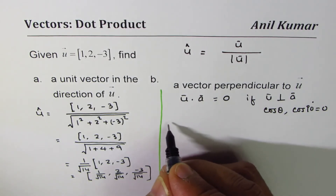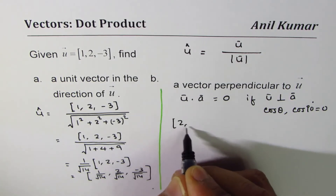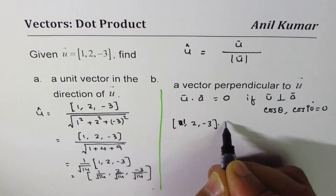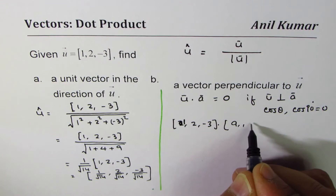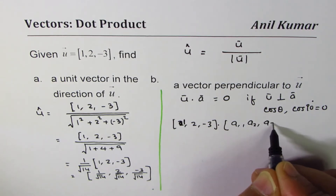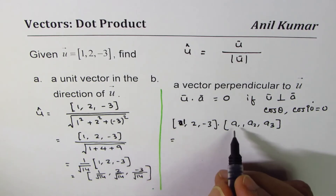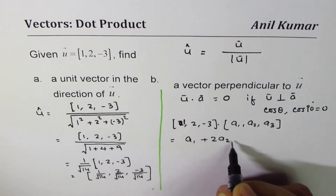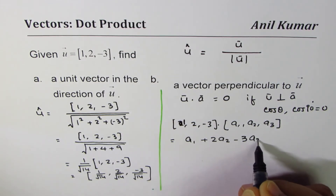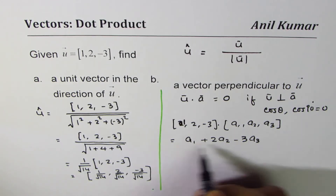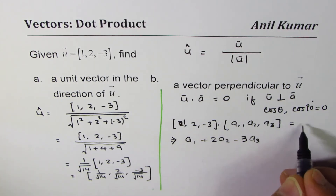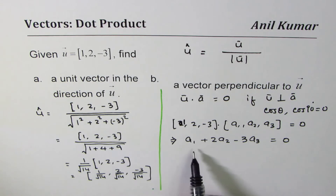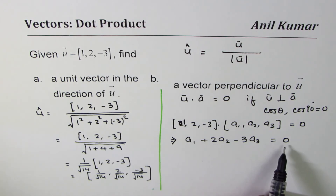We don't know what a is, but we can write the dot product as (1, 2, -3) · (a1, a2, a3). This equals a1 times 1 plus 2·a2 minus 3·a3, and that should equal 0. Any combination of these components that results in 0 will give us the dot product equal to zero.